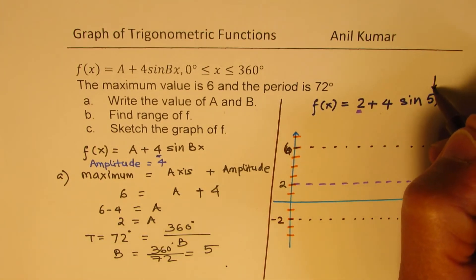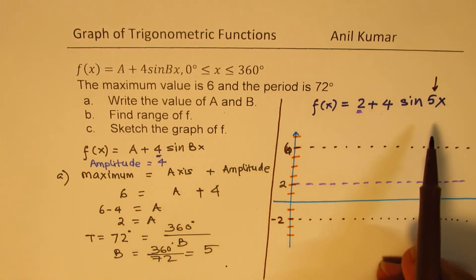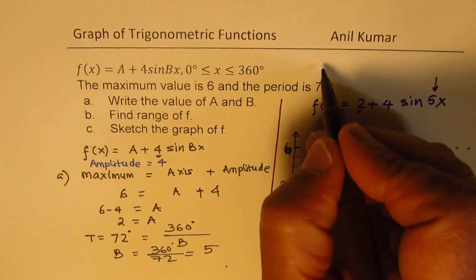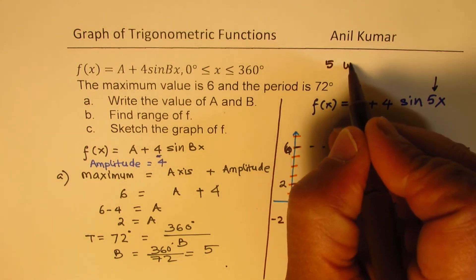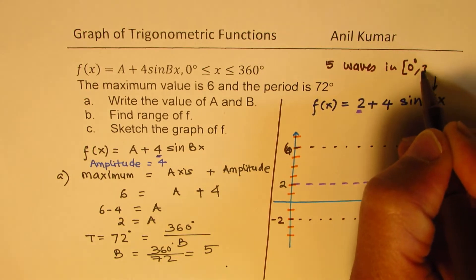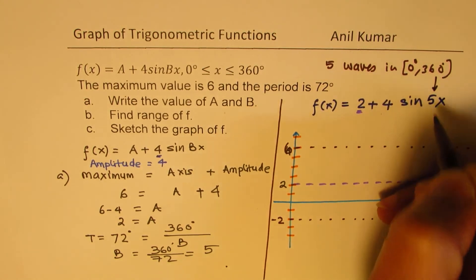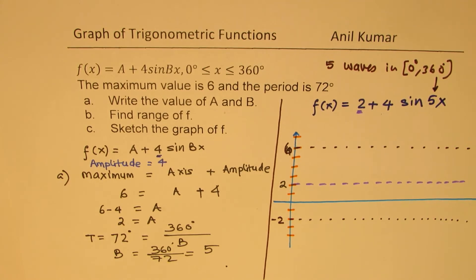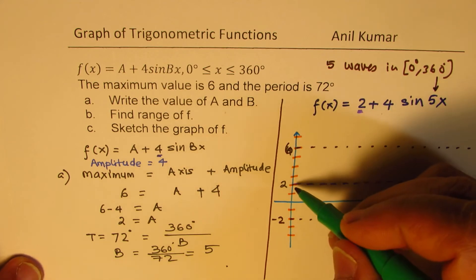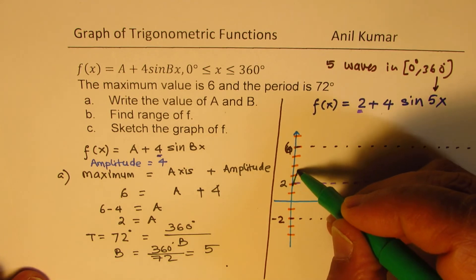Now, what is 5? 5 basically reflects the time period and also tells you that within 0 to 360, we have 5 waves, so we have 5 waves in this interval, 0 degrees to 360 degrees. That is what this value of K represents.